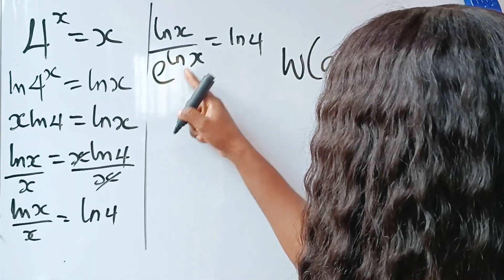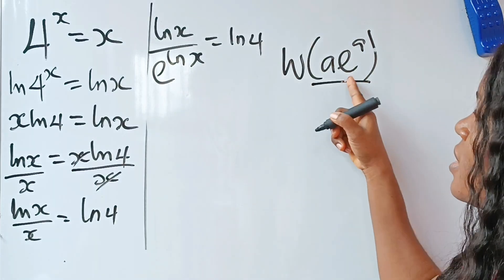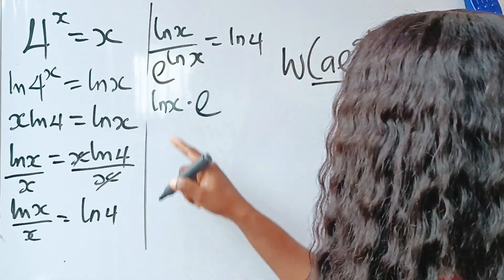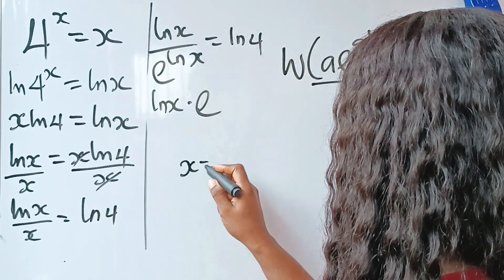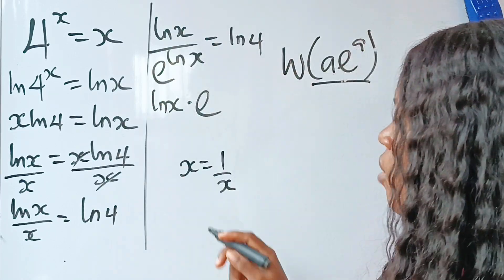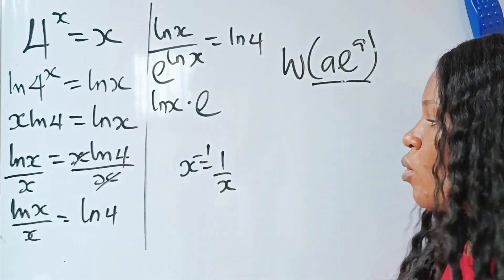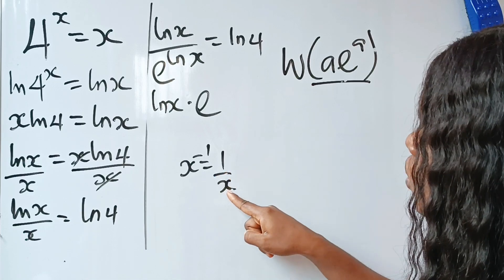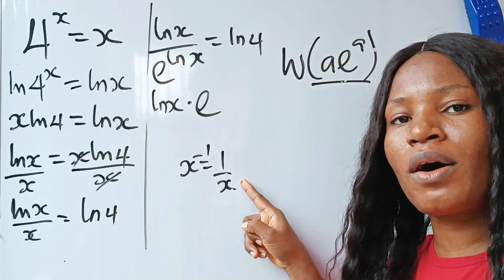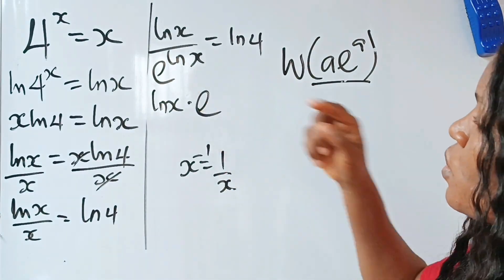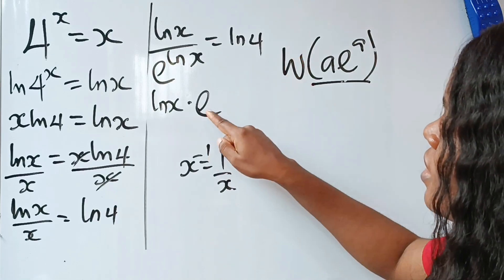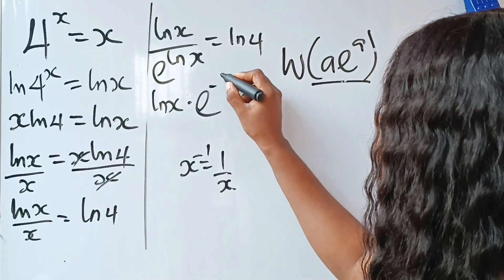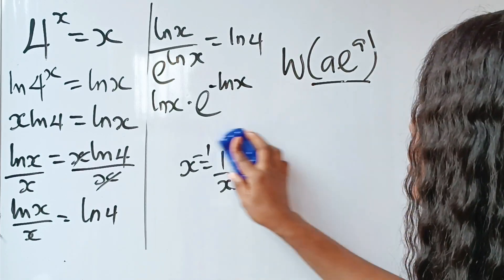I'm going to bring this up because I'm trying to form something similar to the Lambert W form. So I now have ln(x)·e^(ln x). Note that x to the power of minus one equals 1/x, so to remove the '1 over', I introduce a negative sign on the exponent. So I will have minus ln(x), making it ln(x)·e^(−ln x) = ln(4).